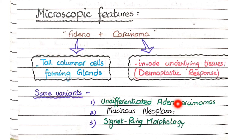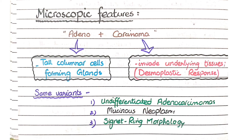There are some variants of colonic adenocarcinomas. The first is undifferentiated adenocarcinoma, in which the tumors do not show differentiation into glands — glands are absent. The second variant is mucinous neoplasm, in which the glands secrete a lot of mucin. The third is signet ring morphology, where the nucleus is pushed to the periphery with a large mucin vacuole in the center. This concludes the pathological features of colonic adenocarcinomas.